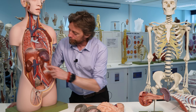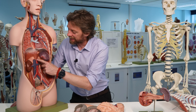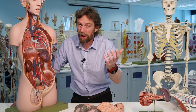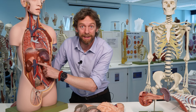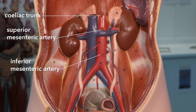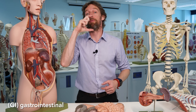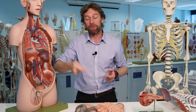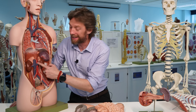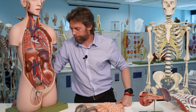The key point is these three branches of the abdominal aorta: the celiac trunk, the superior mesenteric artery, and the inferior mesenteric artery. Those three arteries supply blood to the GI tract. In the embryo, the foregut is supplied by the celiac trunk, the midgut by the superior mesenteric artery, and the hindgut by the inferior mesenteric artery.